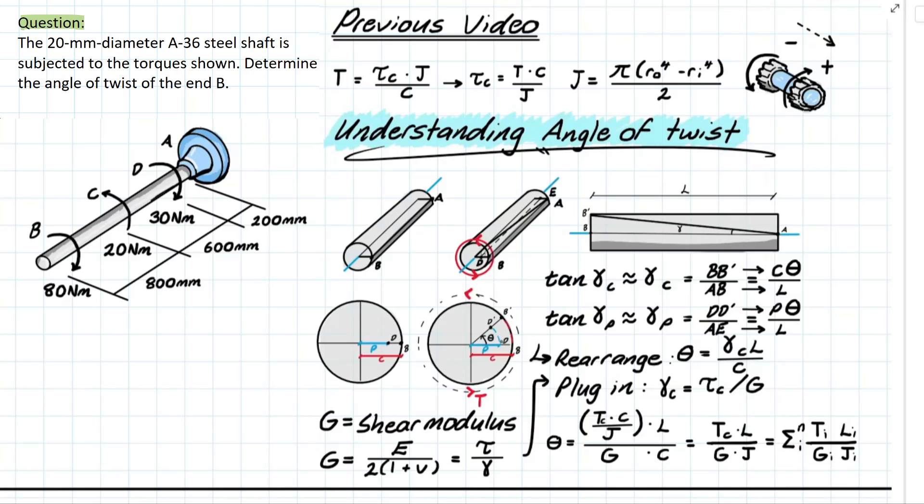So once again using the same kind of logic if we needed to find this angle theta we're going to take the opposite over the adjacent and we're going to be looking at a length c which is the extreme length from that longitudinal axis to the end of our member or the edge face to the opposite side which is bb'.